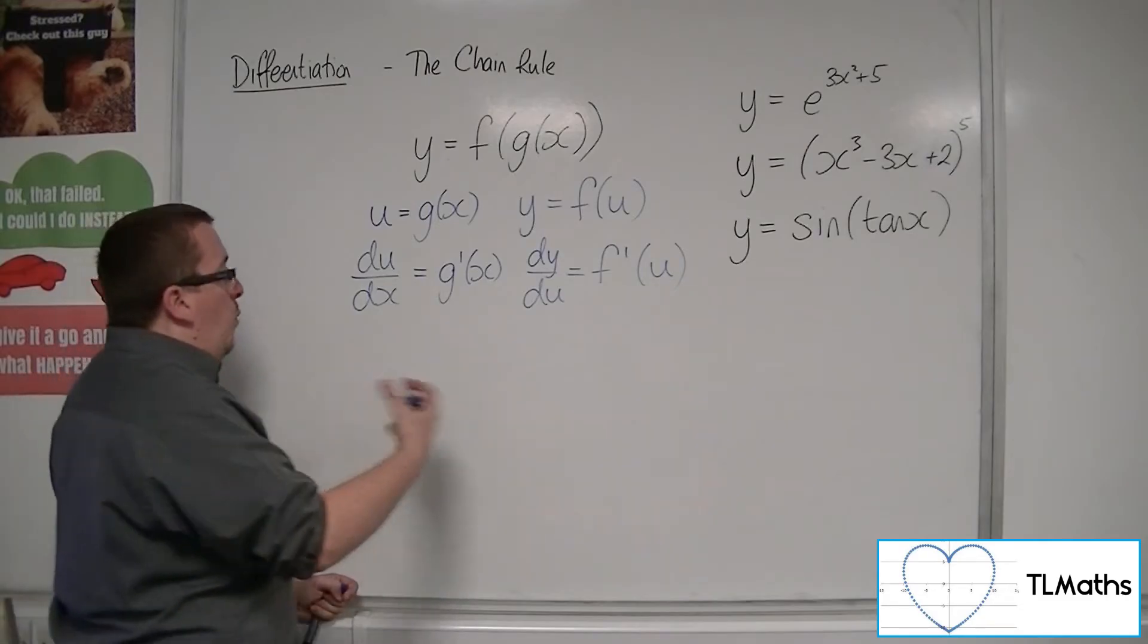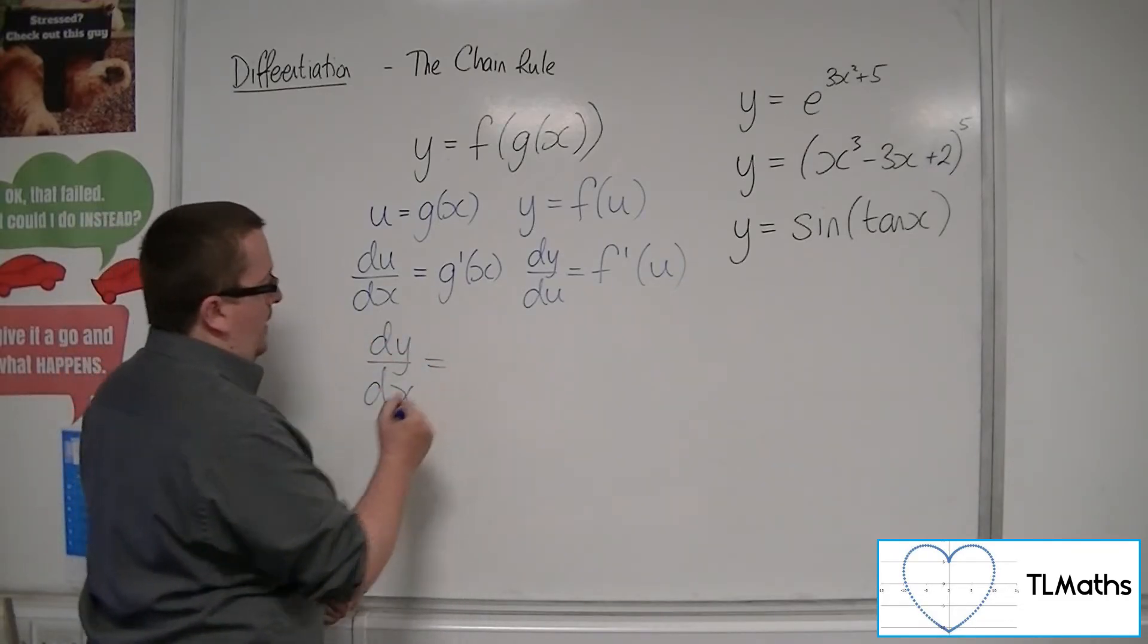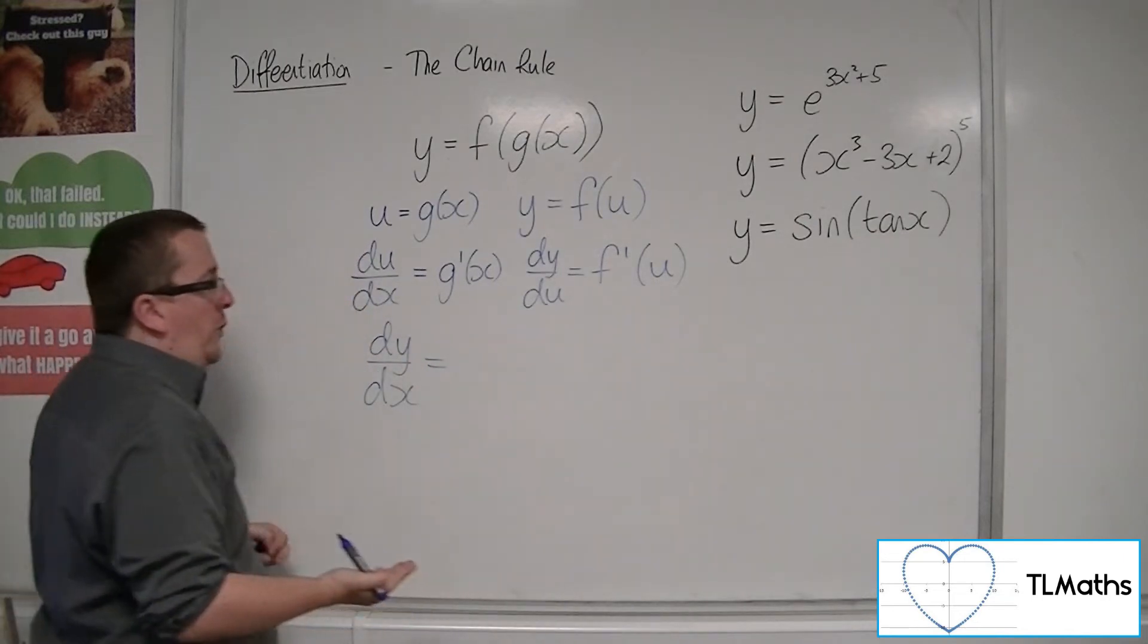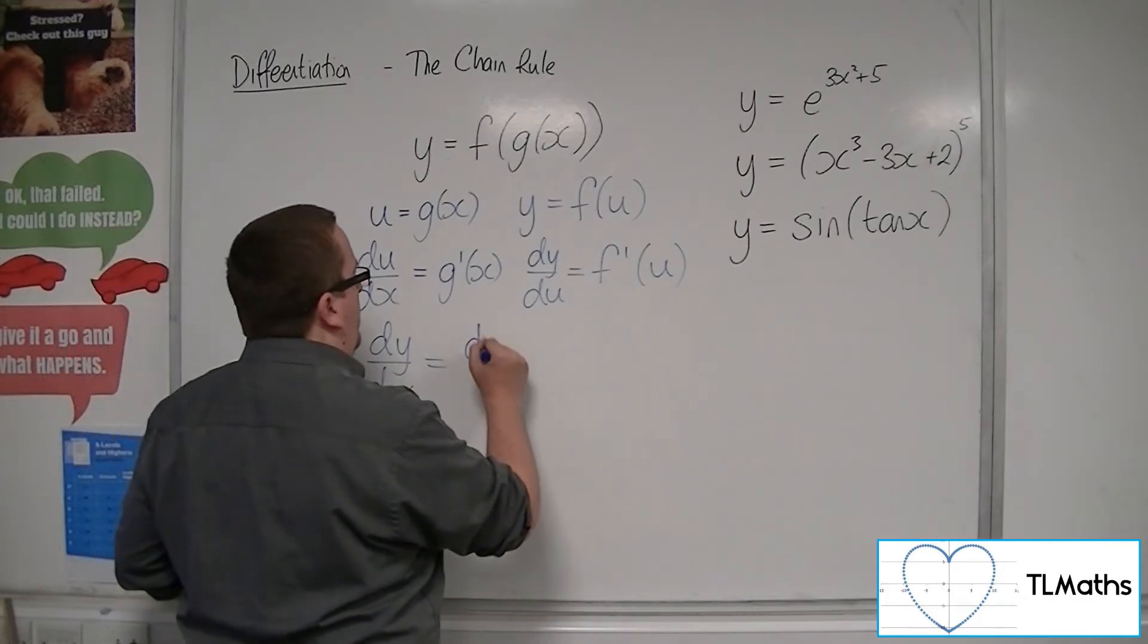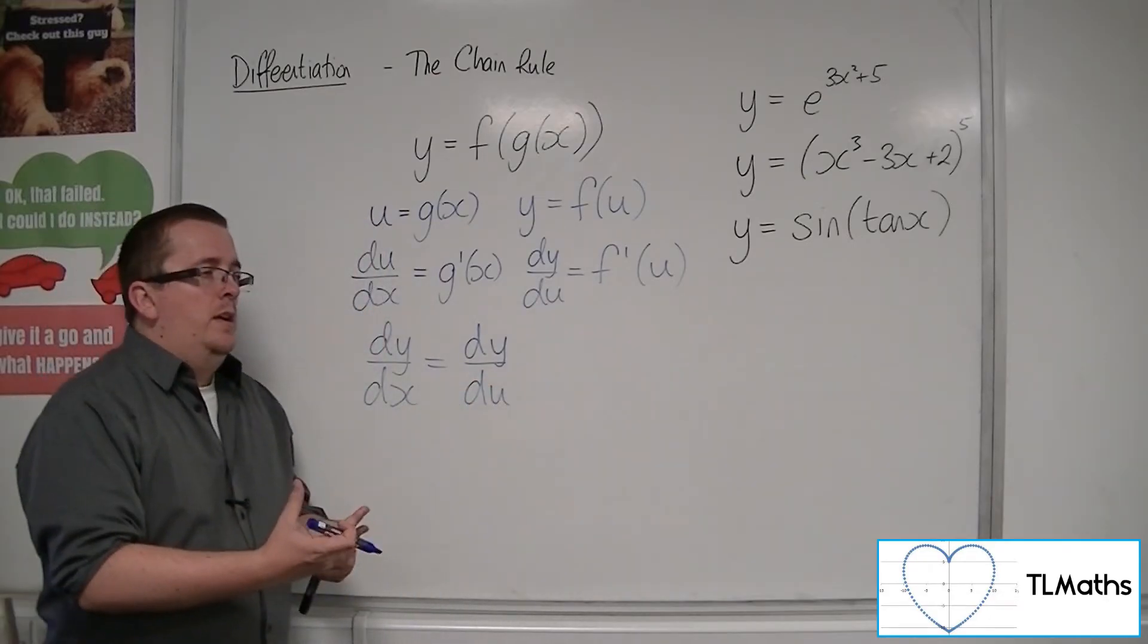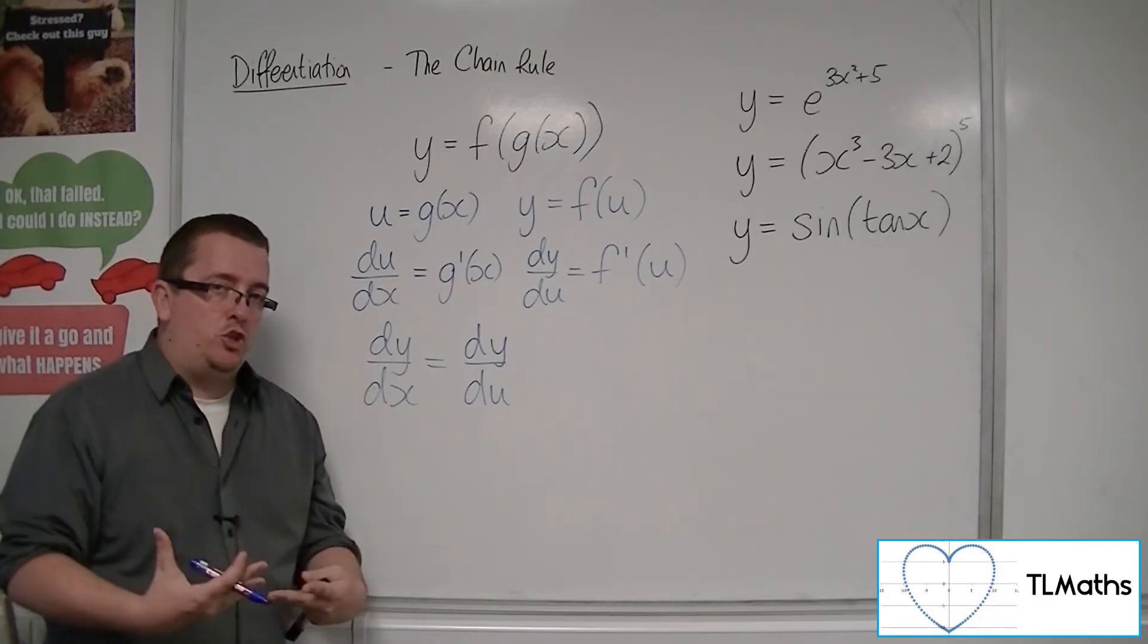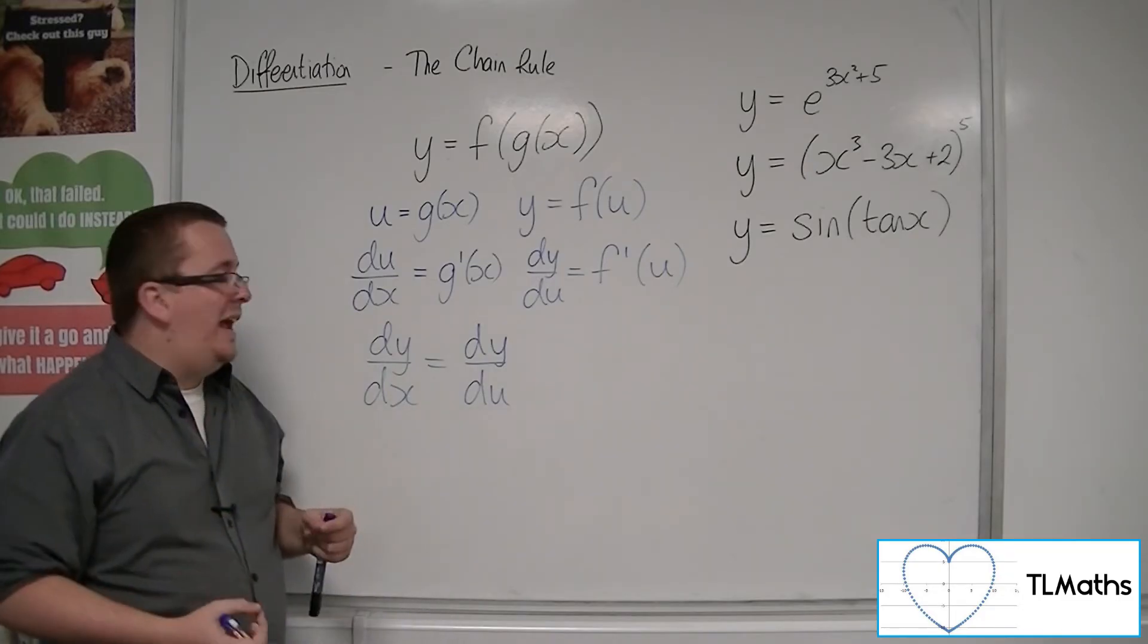So that dy by dx is the product of these two things. Now the reason why they're the product - this is one of those cases where the dy by dx works in a similar way to a fraction.